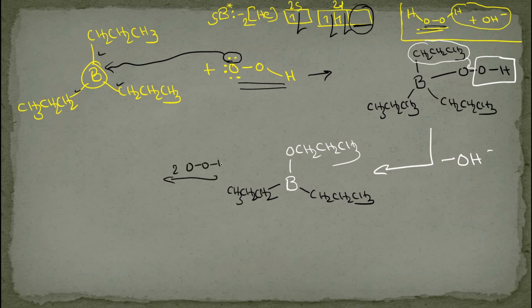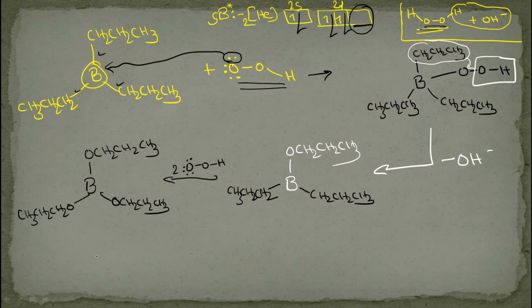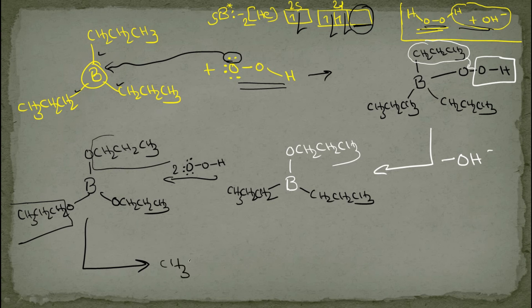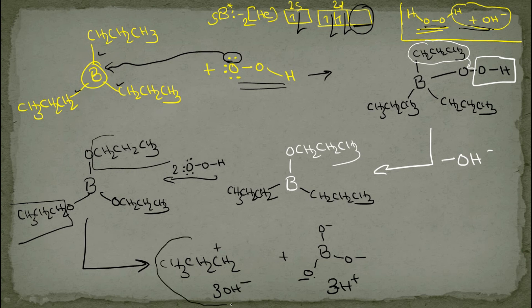Similarly, two more OOH groups attach and two more migrations occur. All three H2O molecules leave. Finally, B has three O-CH2CH2CH3 groups. The propyl groups then remove from boron; with 2H2O, H+ and OH- are released, giving CH3CH2CH2-OH (propan-1-ol) plus B(O-)3 and 3H+.